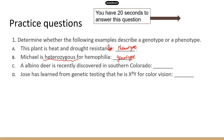Next: 'An albino deer is recently discovered in Southern Colorado.' Albino means the deer is white — the pigment genes are not expressed, so the deer is white as opposed to the regular tan color. This is phenotype. Last one: 'Jose has learned from genetic testing that he is this particular genotype for color vision.' We see letters, so it's pretty obvious that this is a genotype.